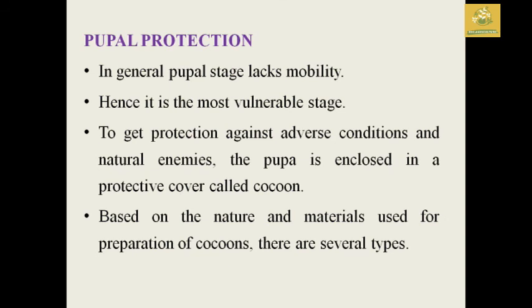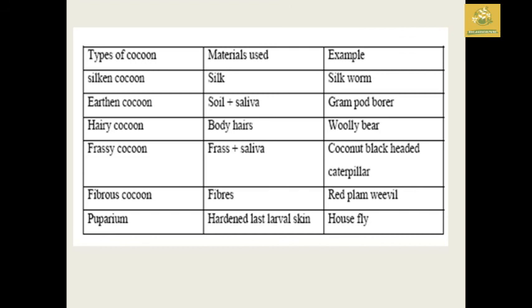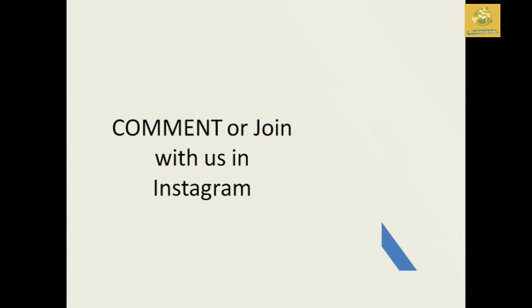In general, pupal stages lack mobility, making them the most vulnerable stage of every insect. To get protection against adverse conditions and natural enemies, the pupa is enclosed in a protective cover known as a cocoon. Based on the nature and material used, cocoons are of several types: silk cocoon, earthy cocoon, hairy cocoon, frass fibers, and puparium. Lecture notes are given in the description. If you have any doubt, please comment or join us on Instagram. If you liked the video, like, share, and subscribe to BC Agriculture and hit the bell icon for regular updates.